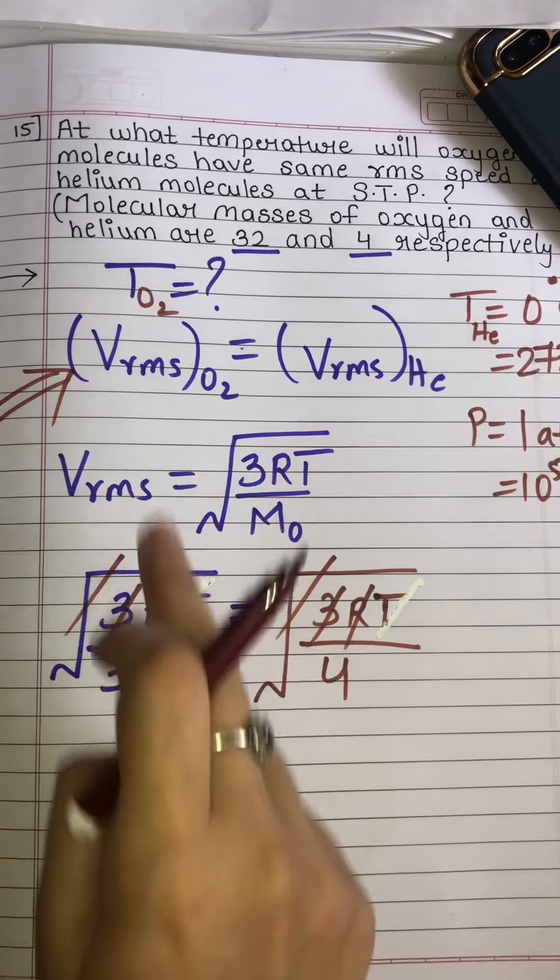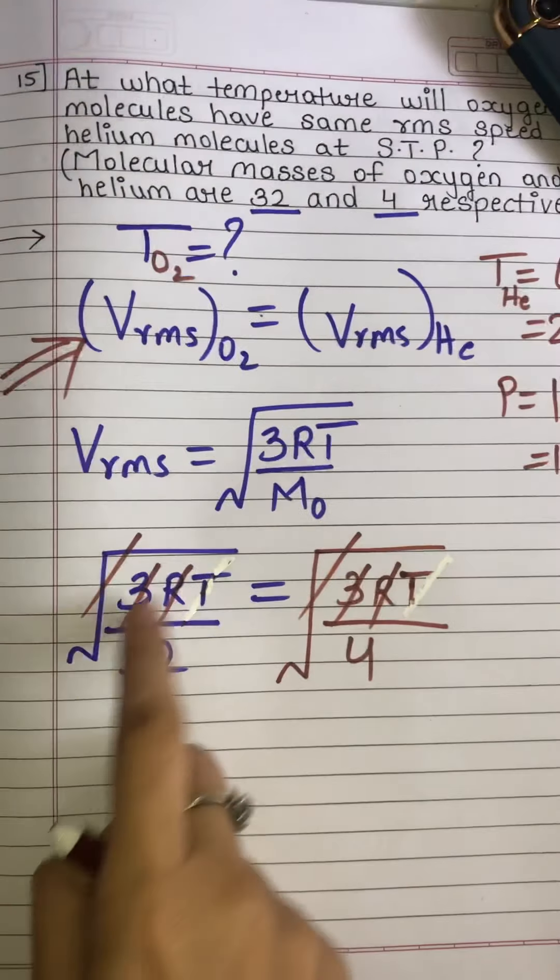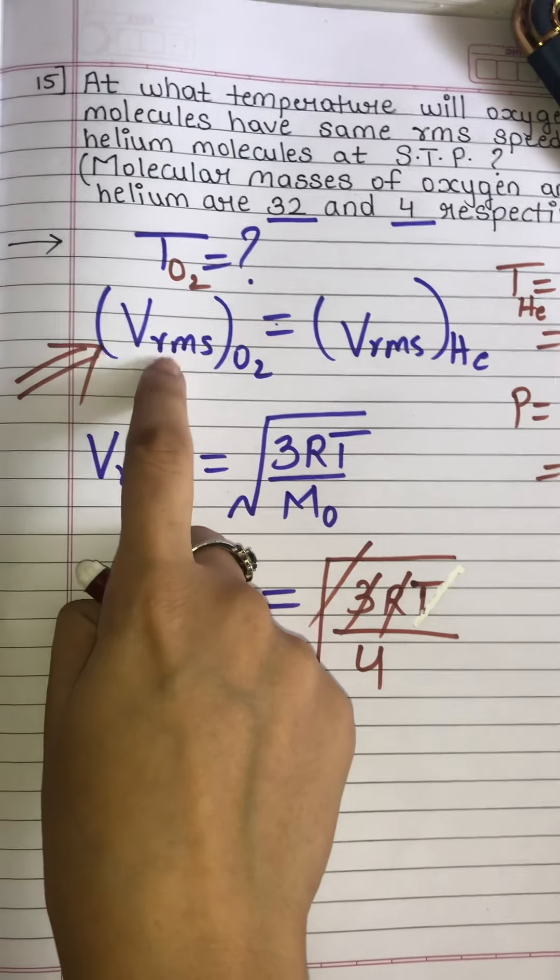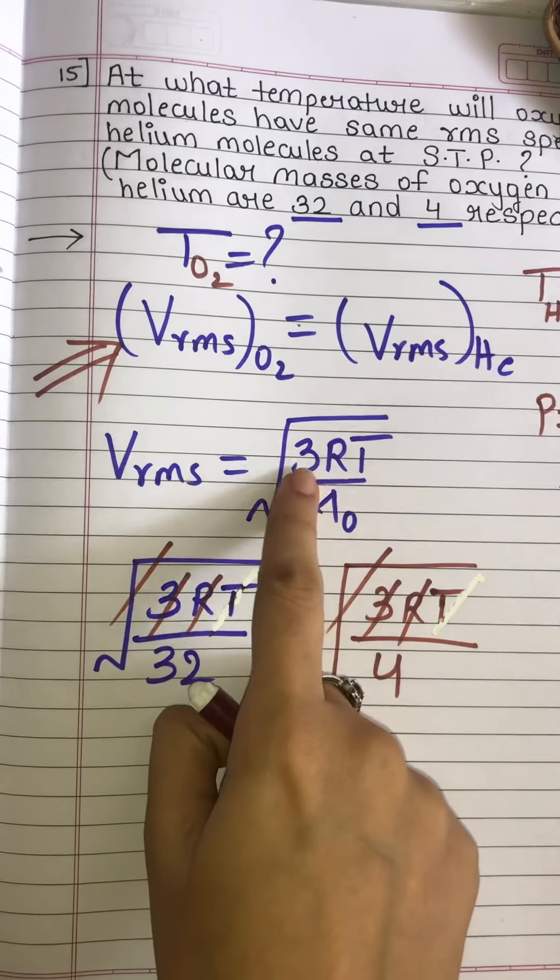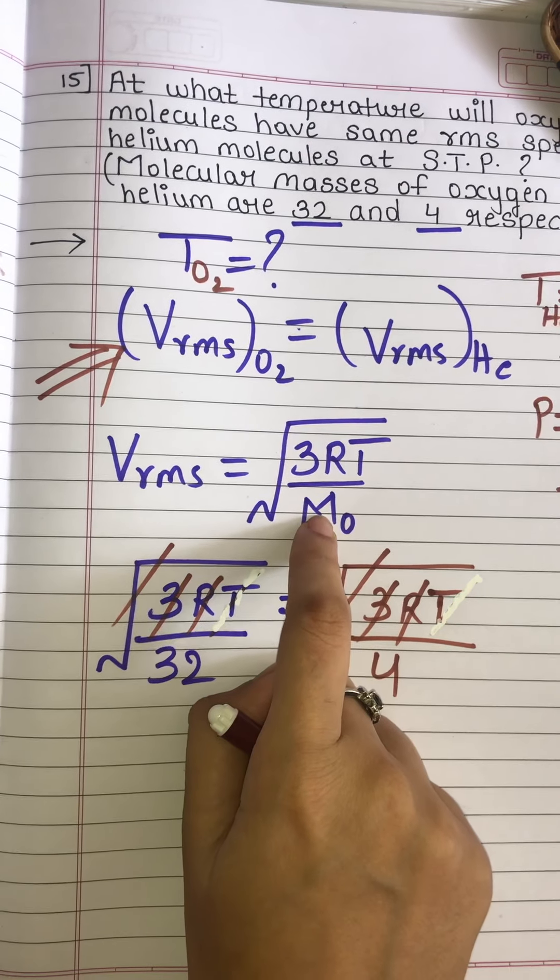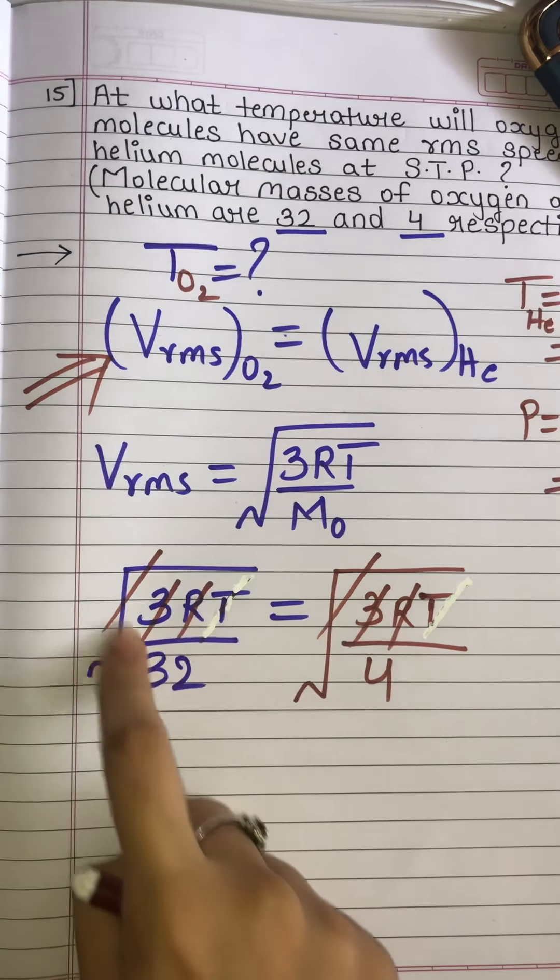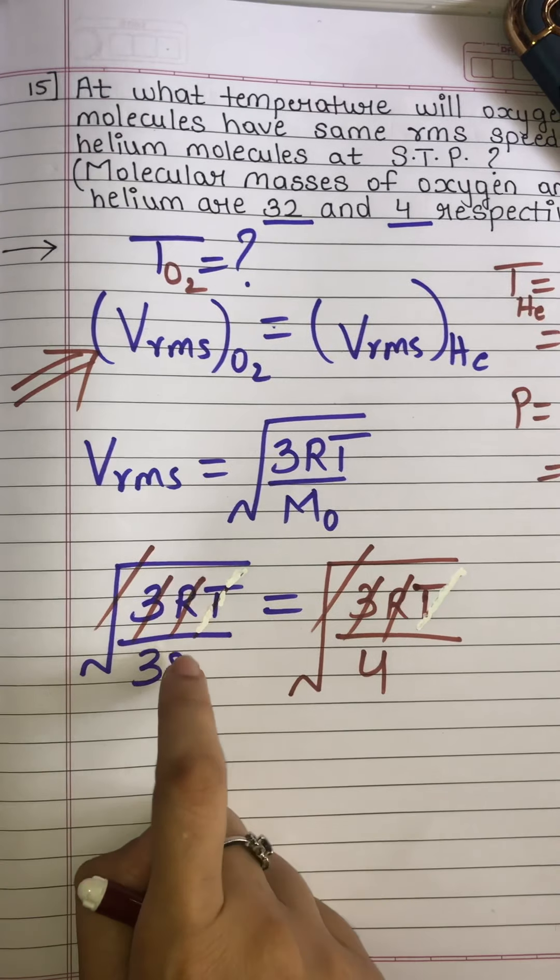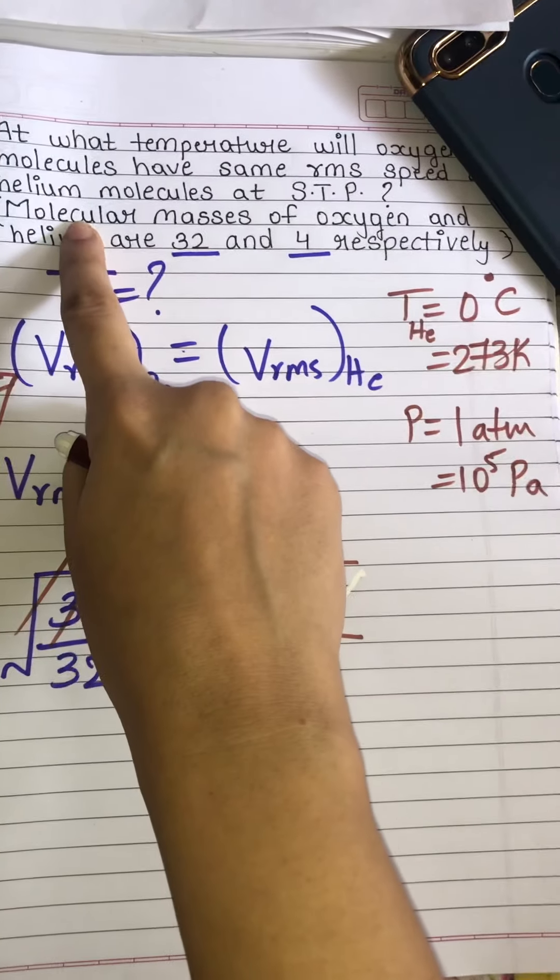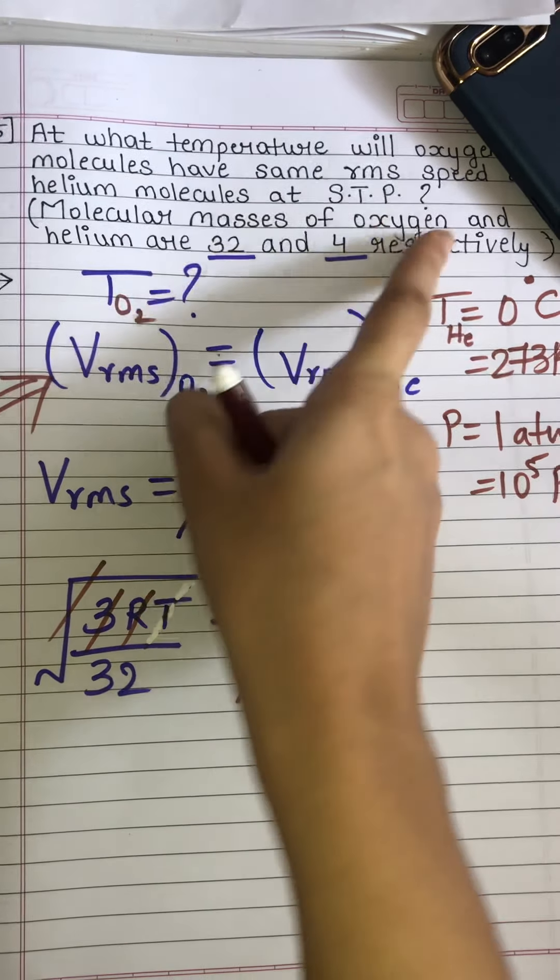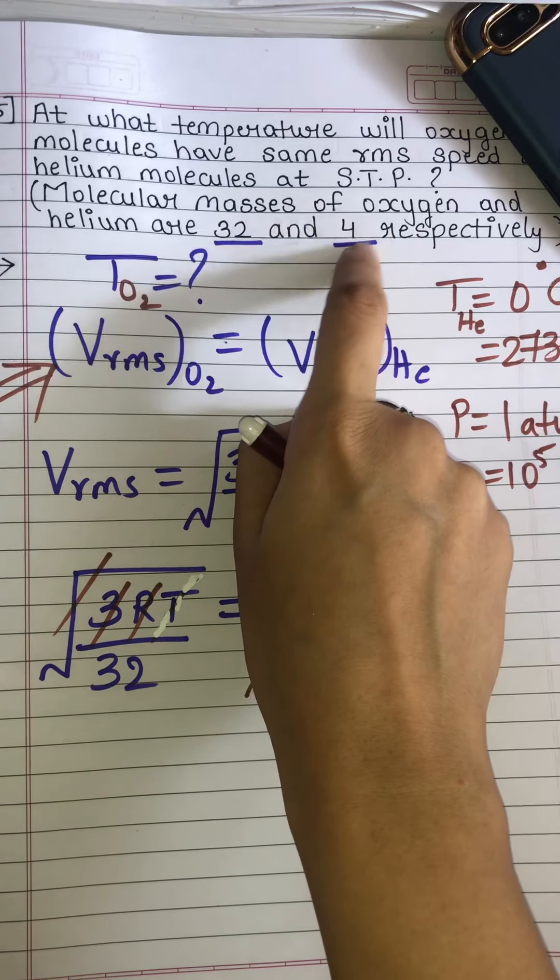Let's substitute this formula according to the condition. For root mean square speed of oxygen, it is the square root of 3RT upon M0, where M0 is the molecular mass of oxygen. The molecular masses of oxygen and helium are 32 and 4, so for oxygen it is 32.